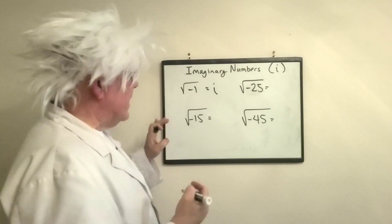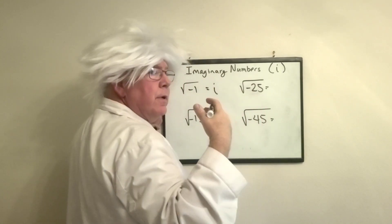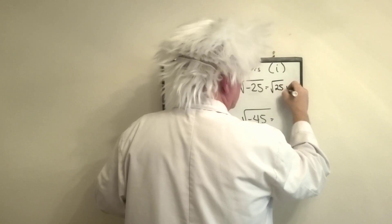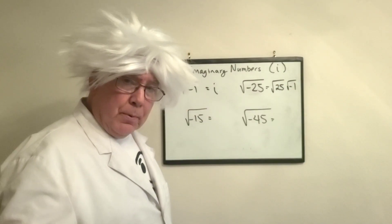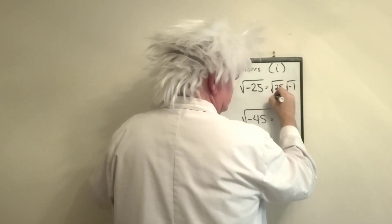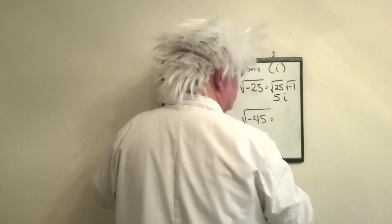First, right here, we have the square root of negative 25. This breaks down into the square root of 25 times the square root of negative 1. I told you we're going to replace the square root of negative 1 with i. So this is going to be, the square root of 25 is 5, so this equals 5i.